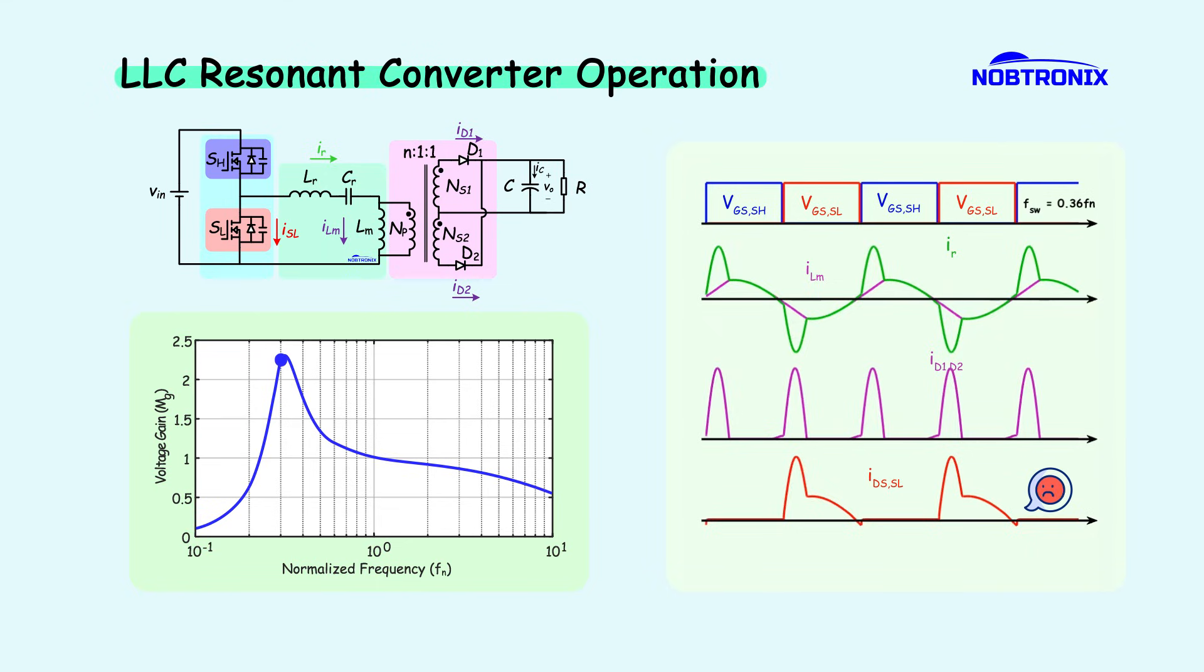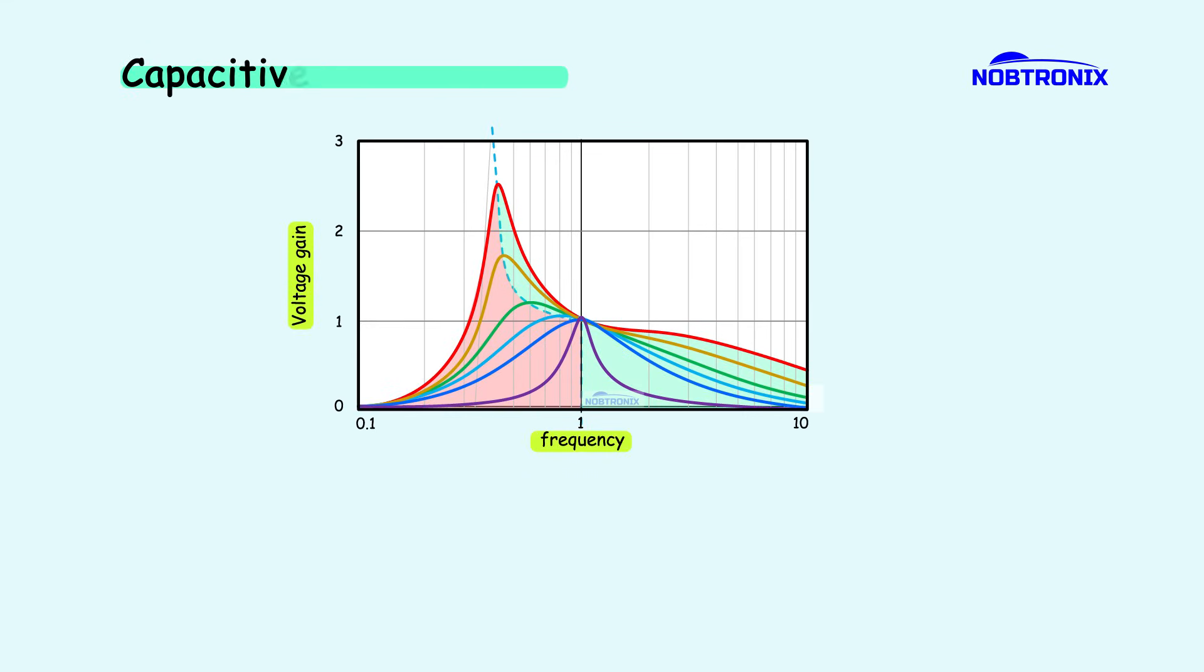This results in reverse recovery losses when the high side switch turns on, increasing the risk of shoot-through and potential MOSFET failure.